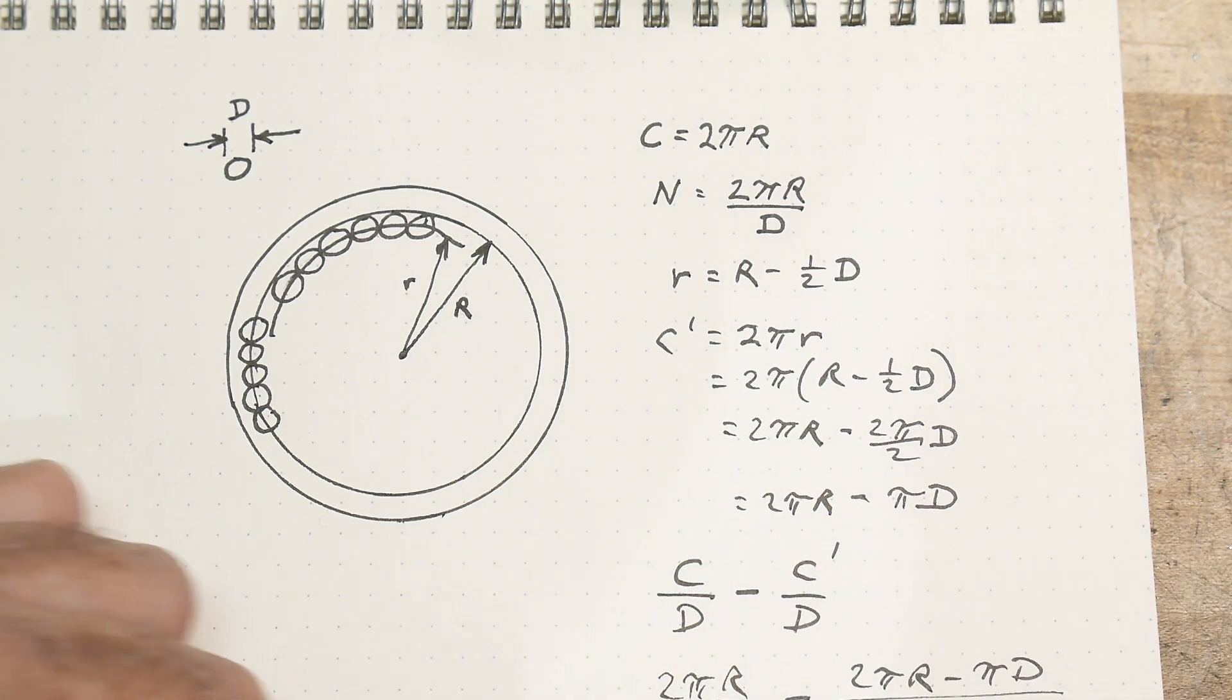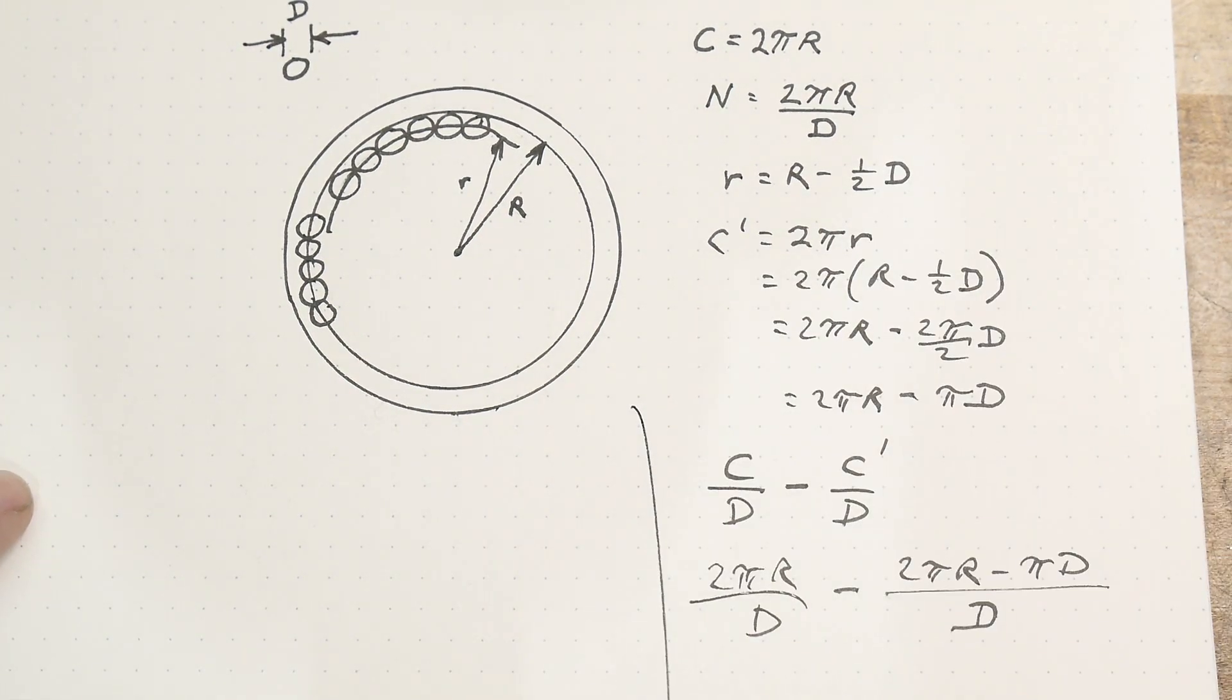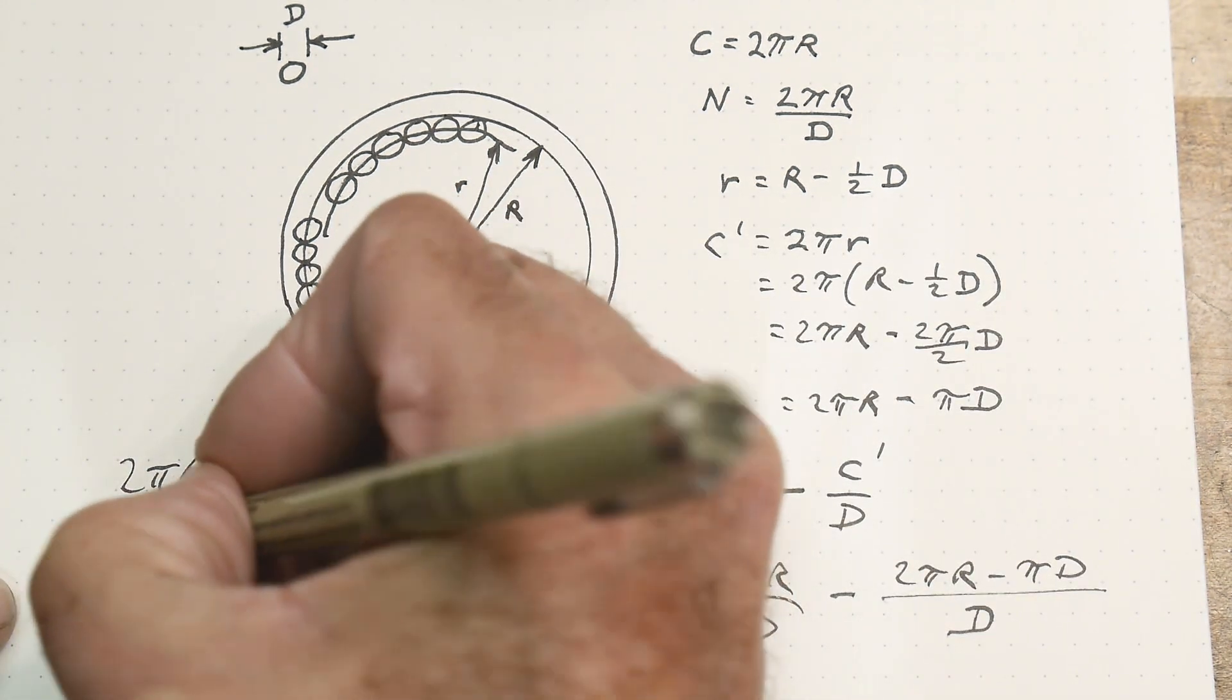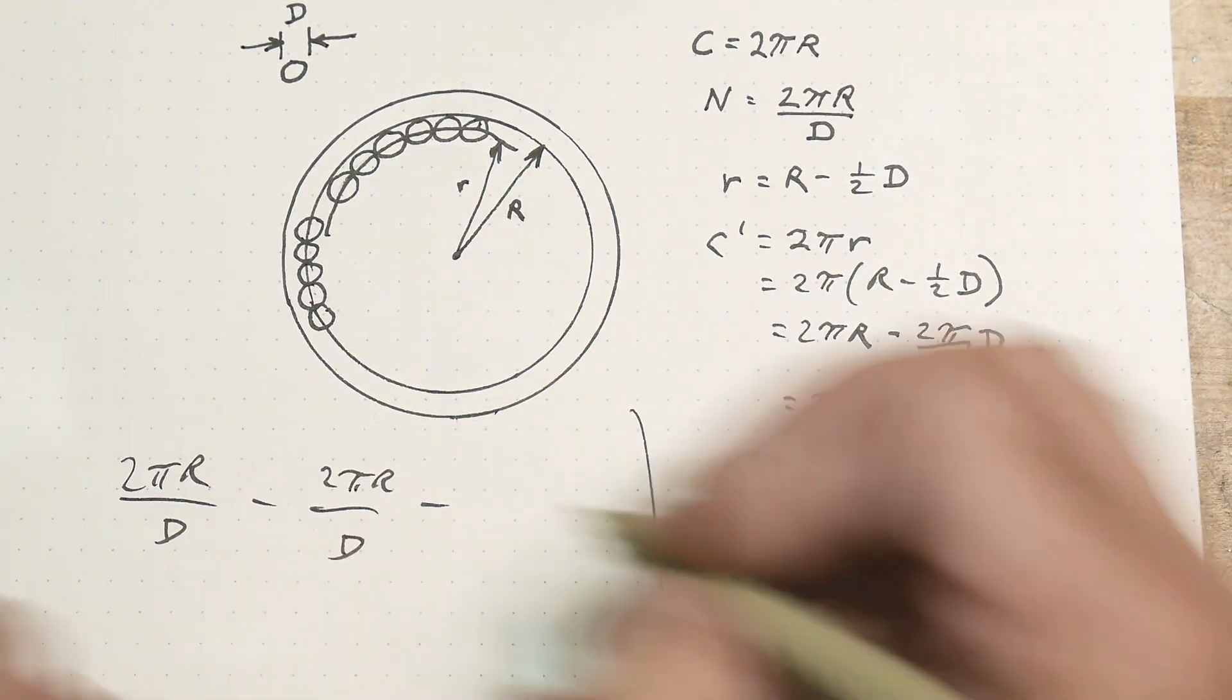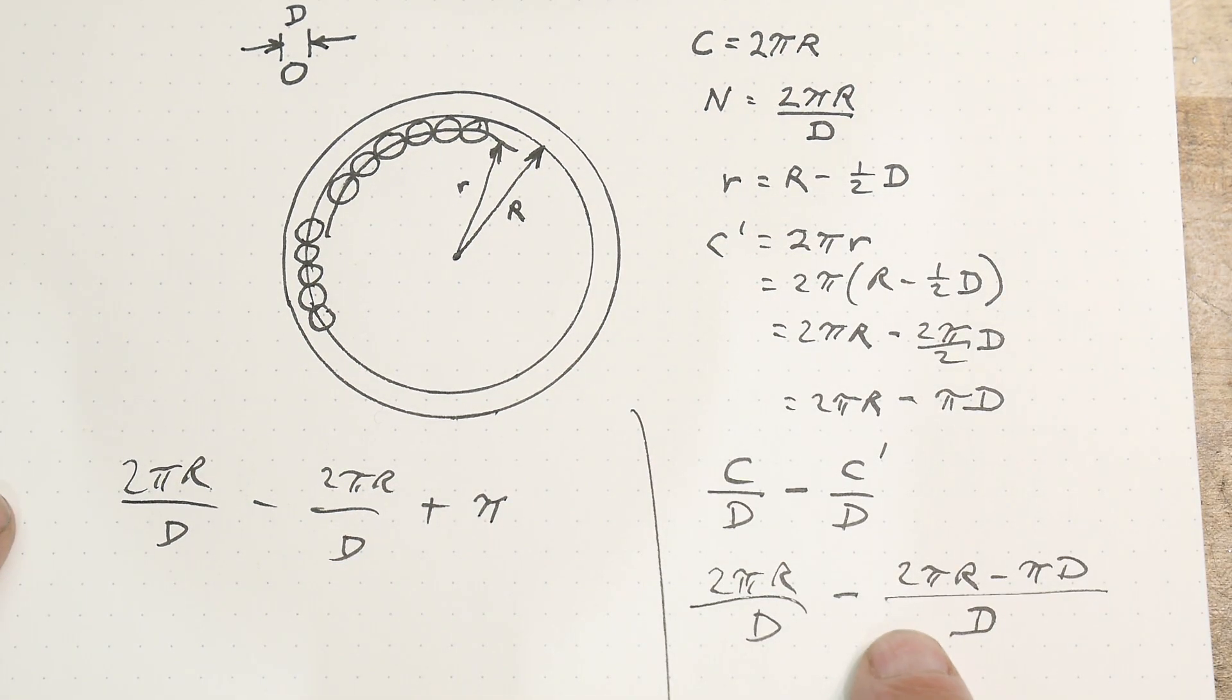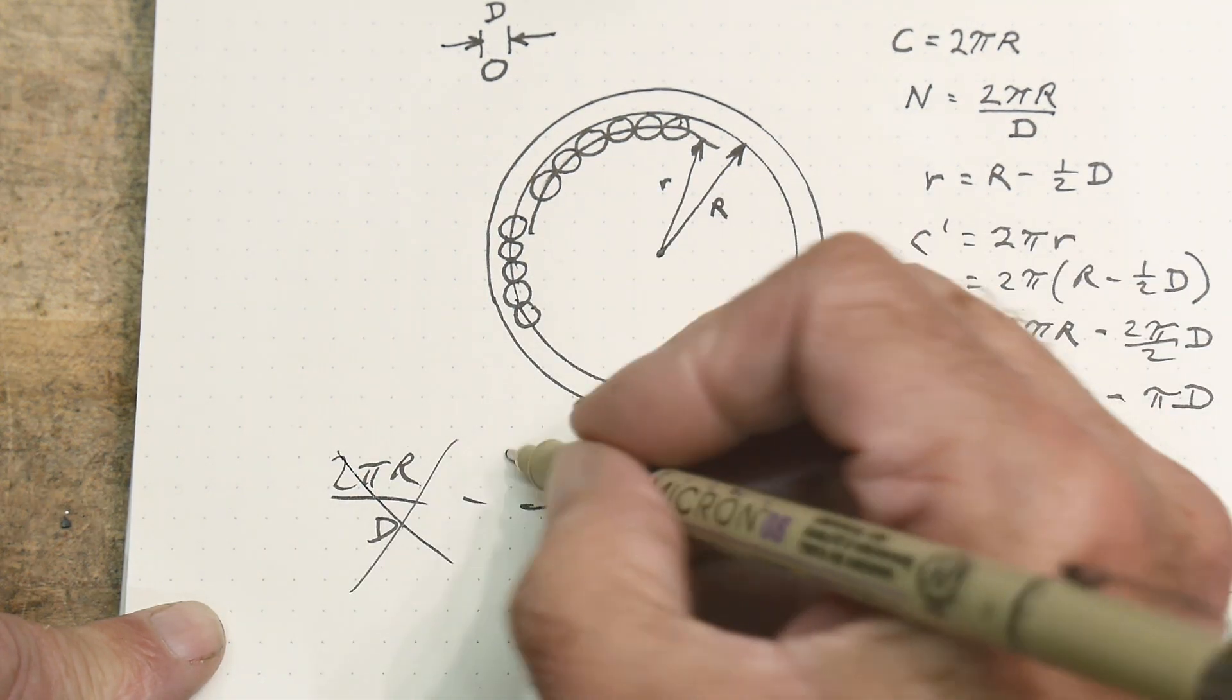So that's equal to 2πr/d minus (2πr - πd)/d. Okay. So that's also equal to 2πr/d - 2πr/d minus plus the two negatives π. Okay. So that's also equal to 2πr/d minus 2πr/d. You see that? 2πr/d minus 2πr/d. Pi.